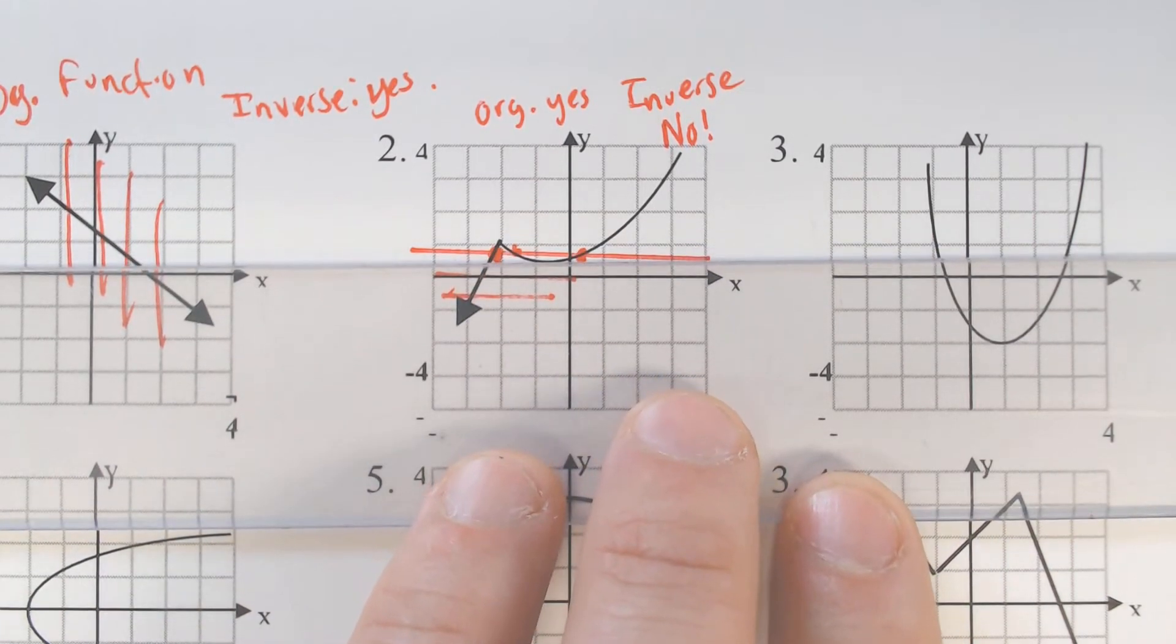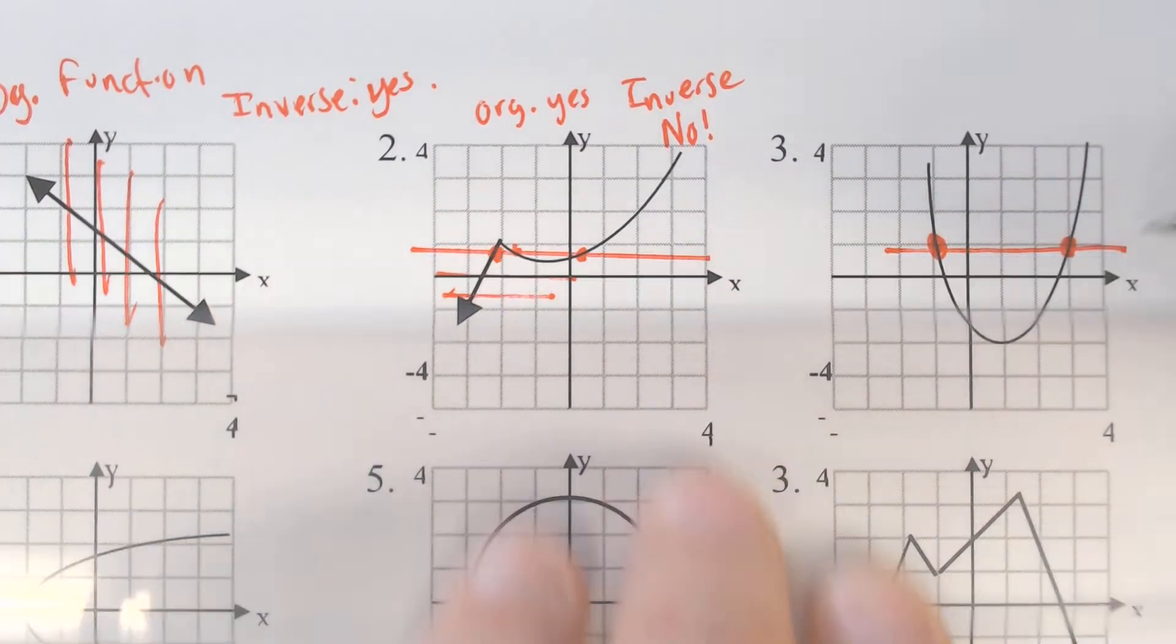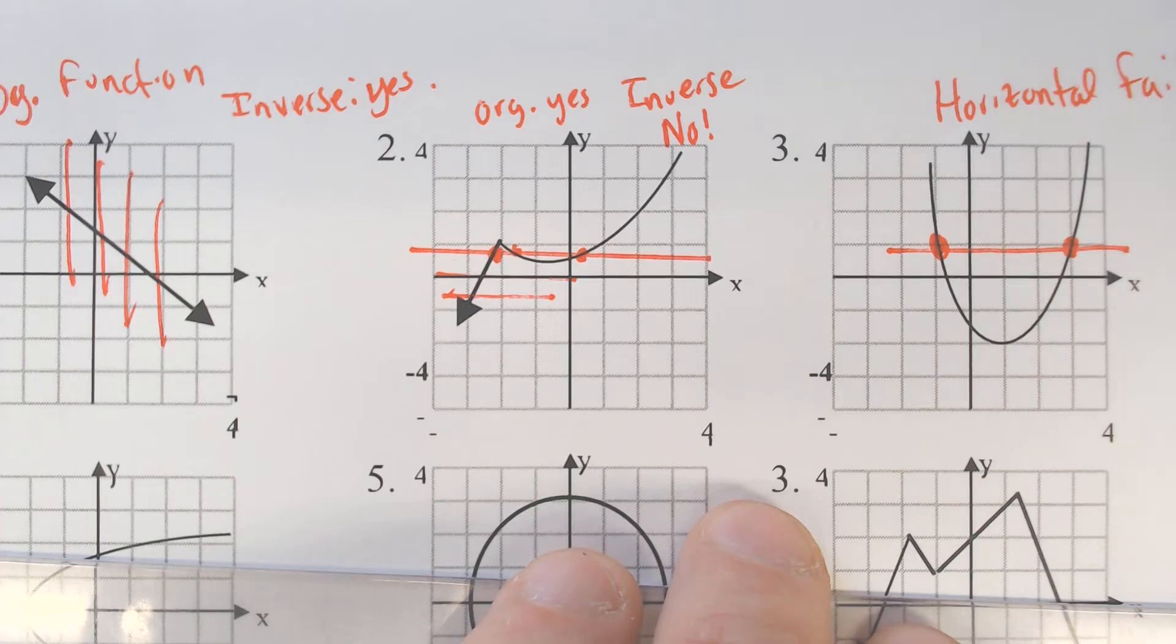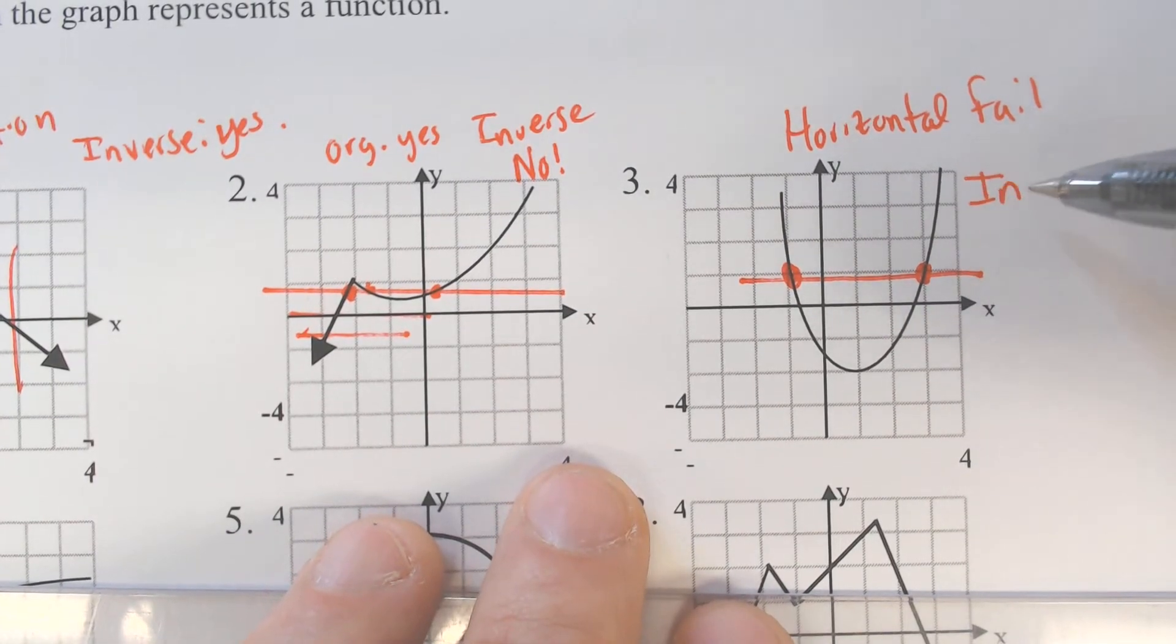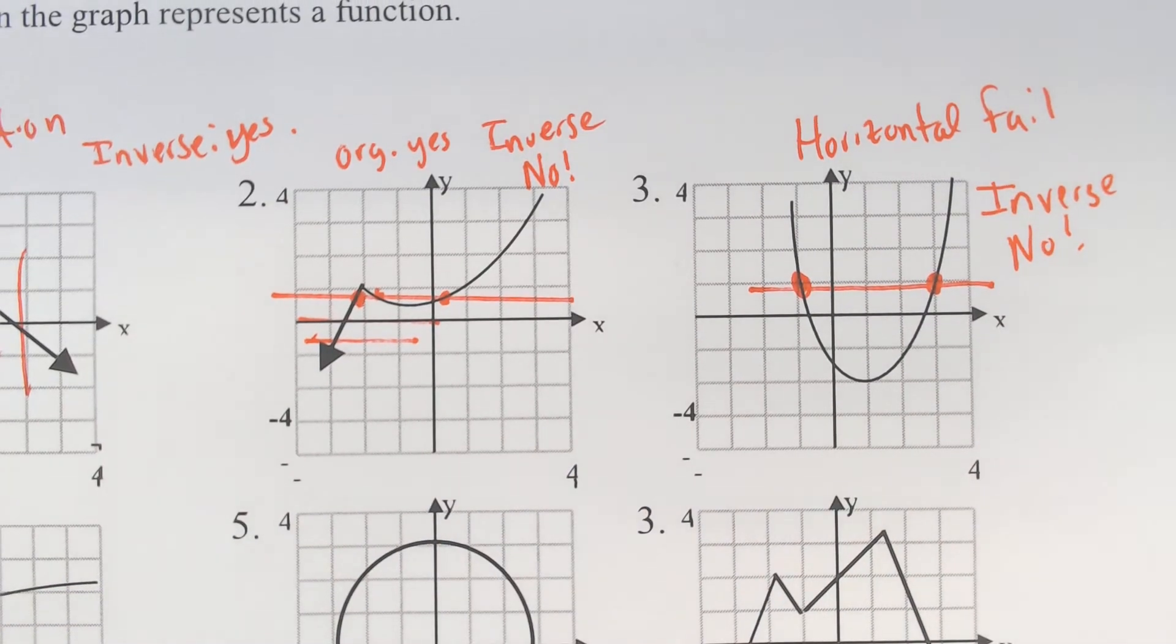Here on number three, we got dot, dot. It's going to fail the horizontal line test. And therefore, it is not going to be a function for the inverse.